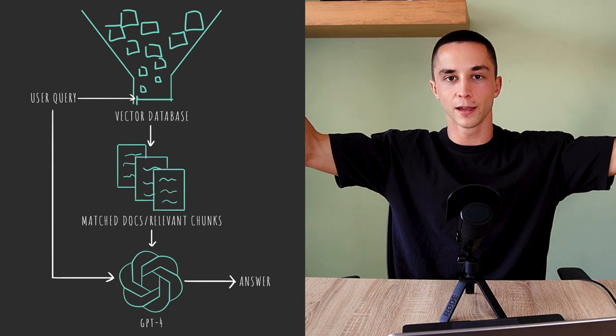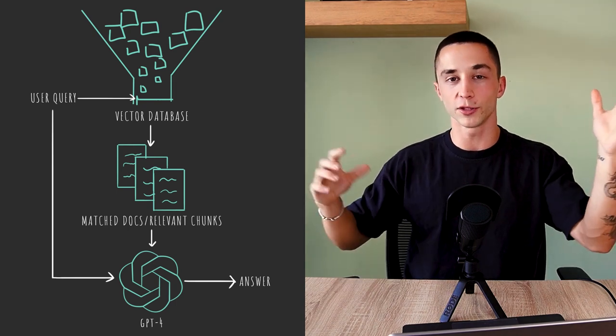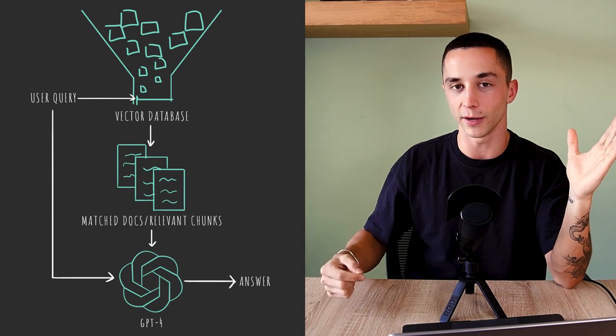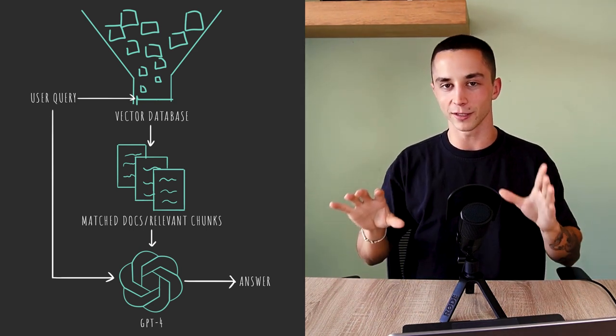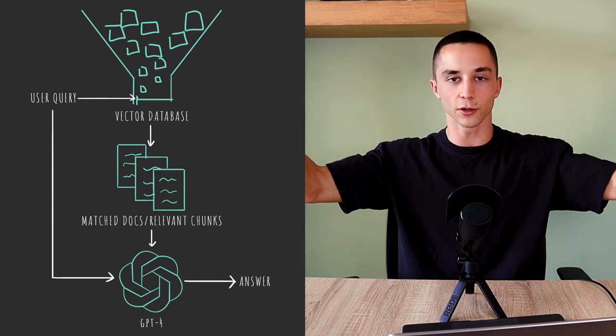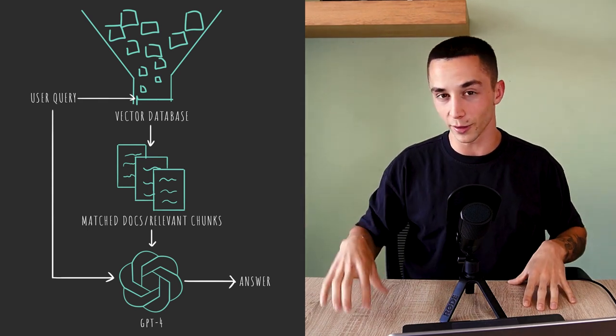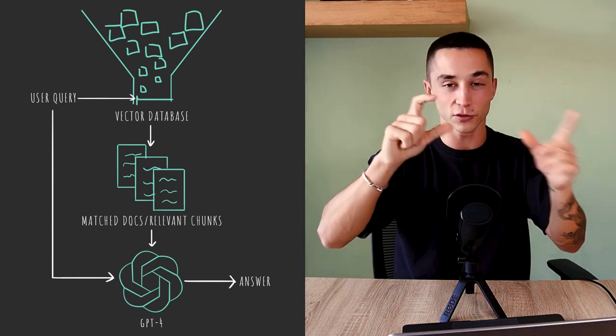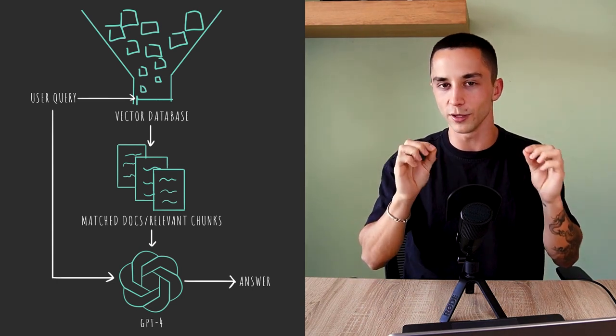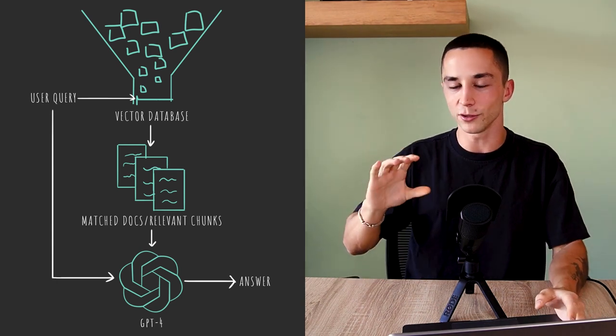The easy way I explain this to clients is: these custom knowledge chatbot systems let you go from say 100,000 tokens of data, and when the user queries, you pick out only the most relevant parts. So with hundreds of thousands of documents, when the user queries the chatbot we only retrieve a couple of pieces of information most relevant to the query. We filter down to only what's most relevant and send that to our LLM like the ChatGPT API to answer the question.